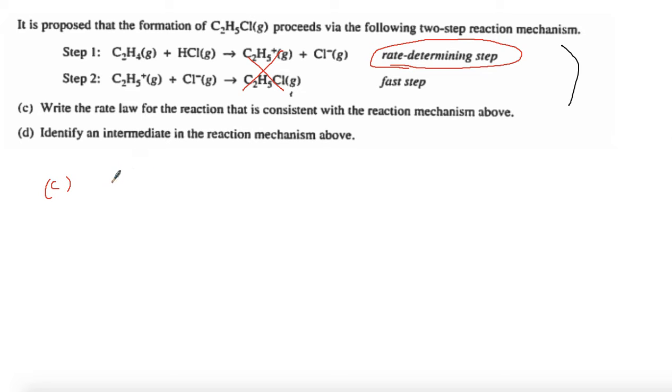To write the rate law I would say rate is equal to k times the concentration of C2H4 times the concentration of HCl, and they're both to the first power because they both have a coefficient of one. We will not write the fast step - it happens so quickly that it doesn't affect the overall rate. It's always the rate determining step.